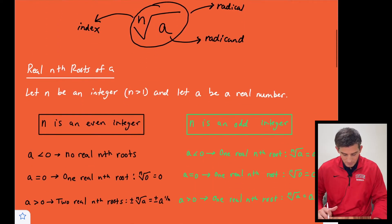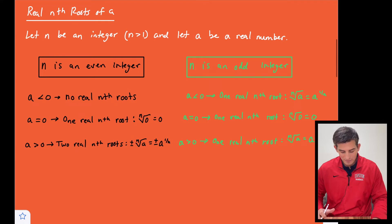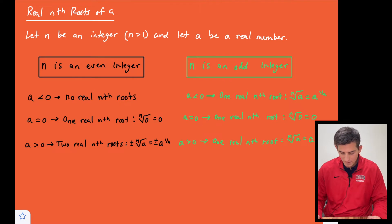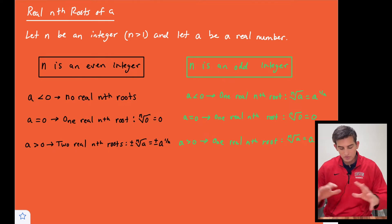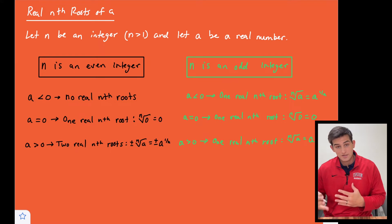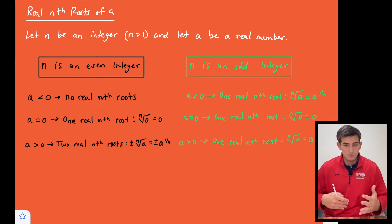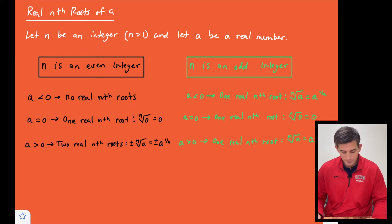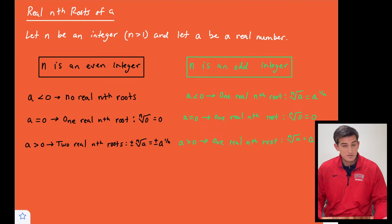Let's talk about what kinds of nth roots we can have. Let n be an integer greater than one and let a be a real number. We have two options: n could be an even integer — so we're taking the square root, fourth root, sixth root, and so on — or n could be an odd integer — so we're taking the cube root, fifth root, seventh root, and so on.